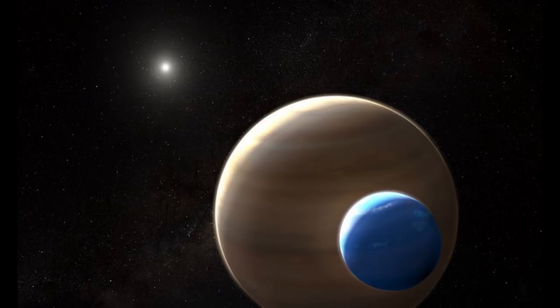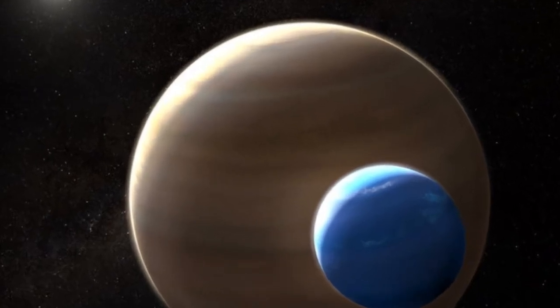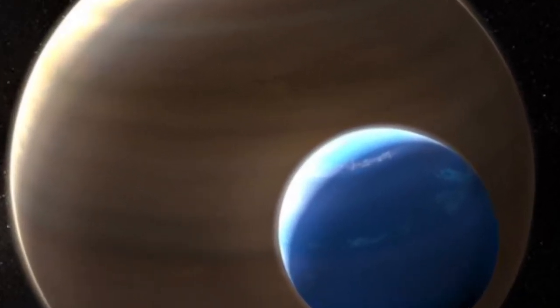A habitable exomoon is a moon orbiting an extrasolar planet that has the ideal conditions to host life as we know it.